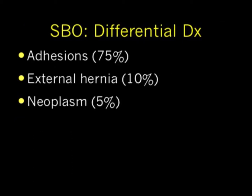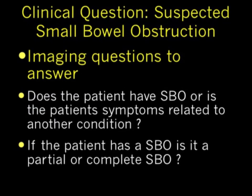When you look at numbers, adhesions is the big bear in the room at 75%. Hernias are 10% and tumors 5%. Go back 100 years and hernias was number one. As a radiologist — and in fact as a surgeon or internist — what do you need to ask and what do you need to answer?